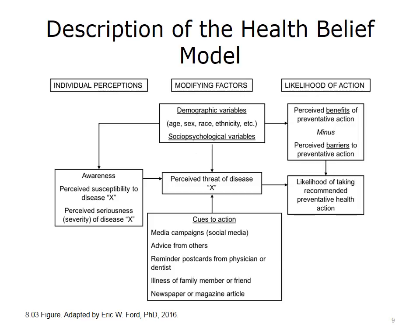The other parts of the health belief model that are important fall under likelihood of action, which appears on the right-hand side of the chart. The first action has to do with decision-making — this is where you look at your perceived benefits and subtract the barriers to action. This is really a cost-benefit analysis: is it worth it to me to get up every morning and go to the gym and pay gym fees in order to lower my risk of cardiovascular disease? Taken together, these factors will determine the likelihood of my taking an action. It's my overall perception of threat coupled with the cost-benefit analysis of action that factor into my likelihood of taking an action.